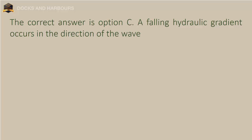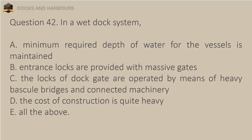Question 42. In a wet dock system: a. A minimum required depth of water for the vessels is maintained. b. Entrance locks are provided with massive gates. c. The locks of dock gates are operated by means of heavy bascule bridges and connected machinery. d. The cost of construction is quite heavy. e. All the above. The correct answer is option E: All the above.